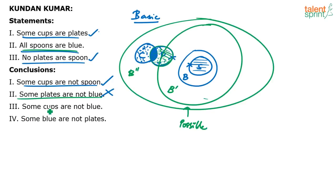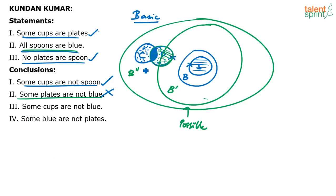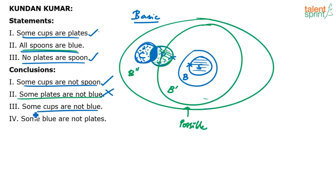Now go to the third conclusion: some cups are not blue. The same argument applies. Again, look at B double dash. When you look at B double dash, all the cups have become blue — all the cups are inside B double dash, which means all the cups are blue. So how can you say some cups are not blue? It is wrong. So the third conclusion does not follow.